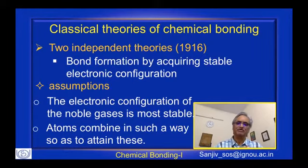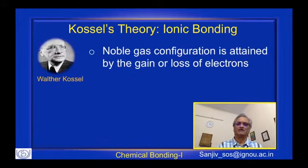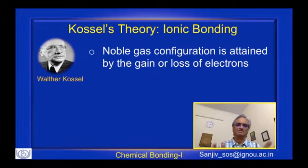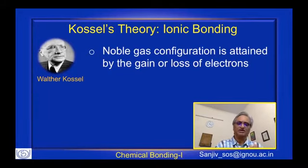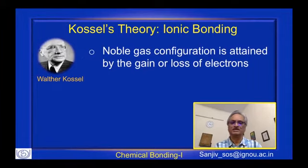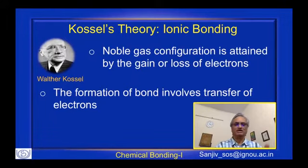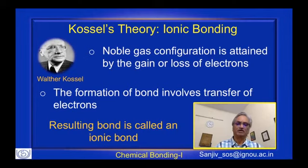Looking at Kossel's theory first — now called ionic bonding — Kossel proposed that the noble gas configuration is attained by gain or loss of electrons. Bond formation involves a transfer of electrons: one atom loses an electron and another atom gains it, giving you what is called an ionic bond. The two theories — Kossel's and Lewis's — differ only in the way this process happens.